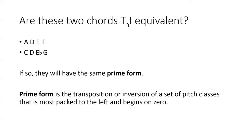The prime form of a pitch class set is like its default format. By choosing the transposition or inversion of the set that is the most compact, any transposition or inversion of that set will also reduce to that same compact form, showing that they are T and I equivalent. So let's learn how to derive a set's prime form and see if these two sets are T and I equivalent.